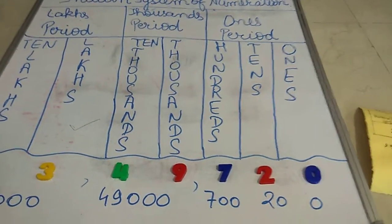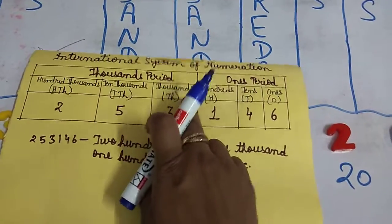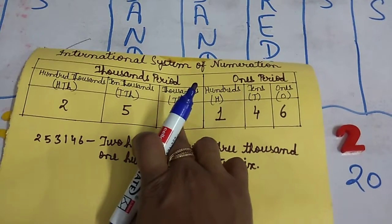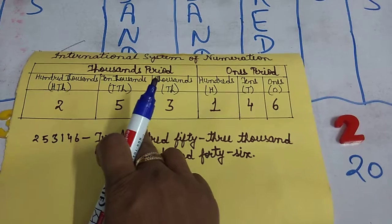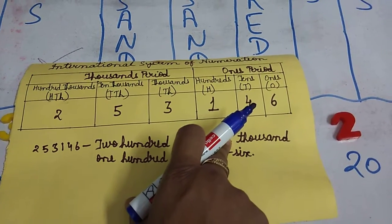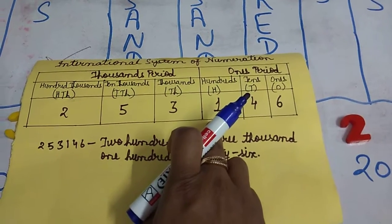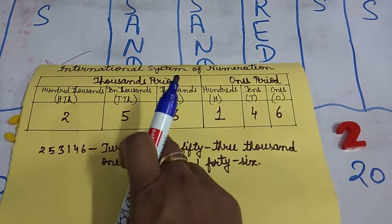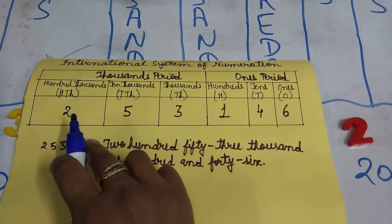Likewise, we will study the international system of numeration. In this system there are two periods: the ones period and the thousands period. The ones period is the same as in the Indian system — it contains ones, tens, and hundreds. In the thousands period, it contains thousands, ten thousands, and hundred thousands, where hundred thousands corresponds to one lakh in the Indian system.